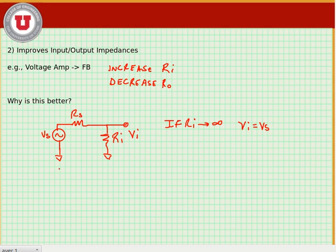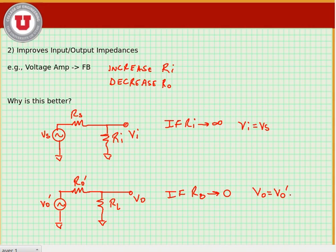Now at the output, if we look at our amplifier as some kind of output voltage generator where it has some output resistance, and this is going to be driving some load resistance Rl, if we look here at what's delivered to the output, if Rout goes to 0, then Vout is equal to Vout of the amplifier. In other words, we have no signal loss.